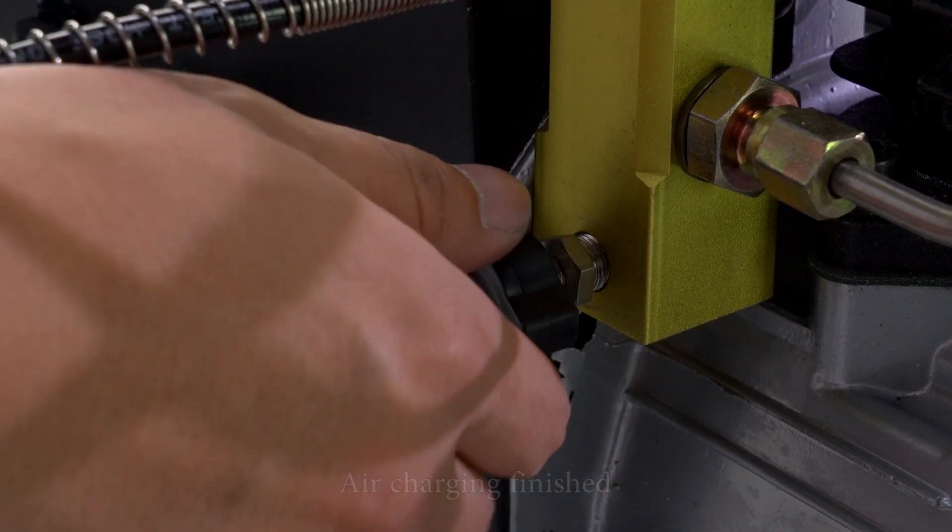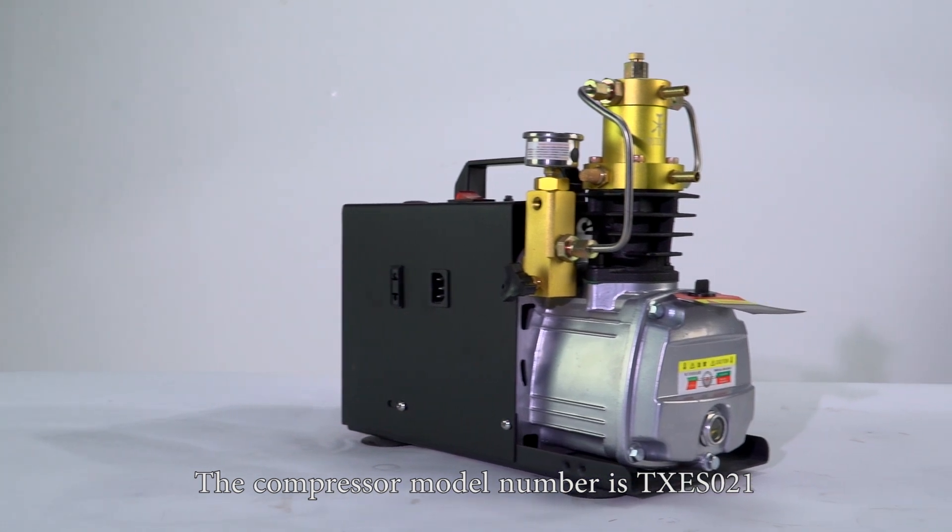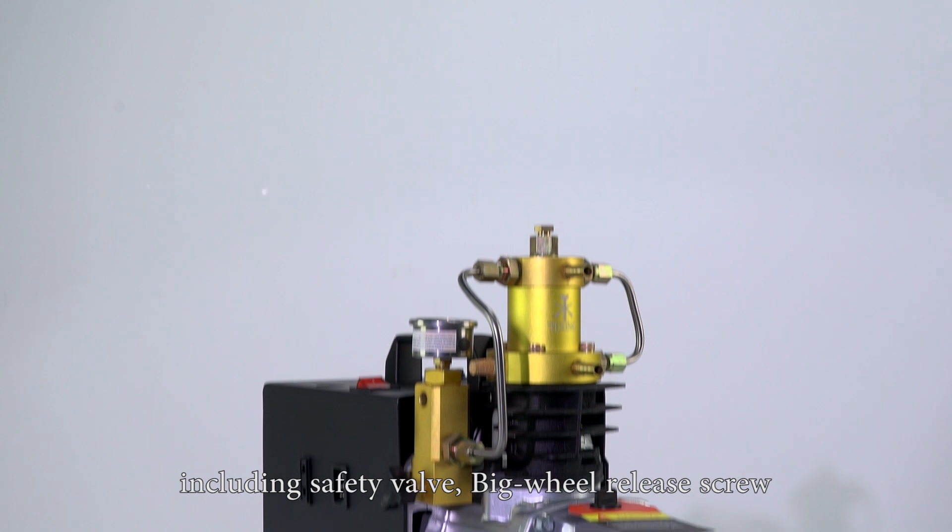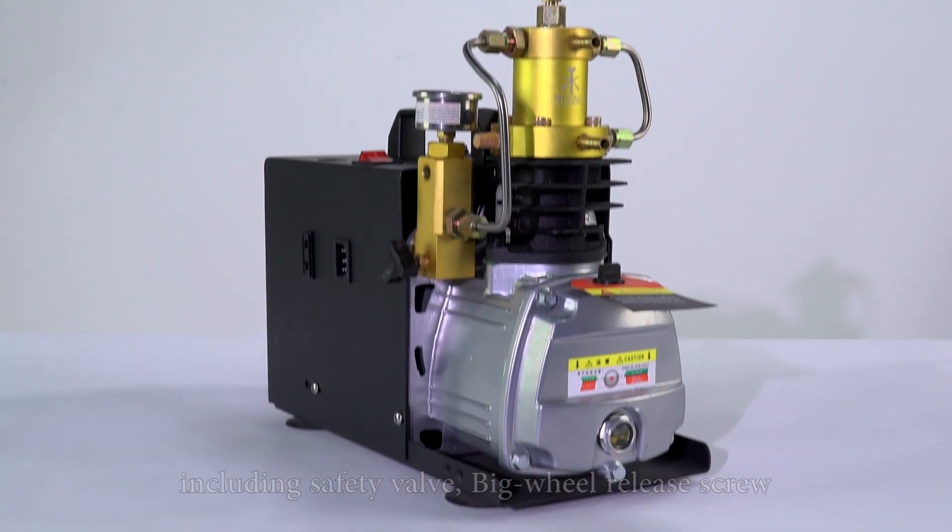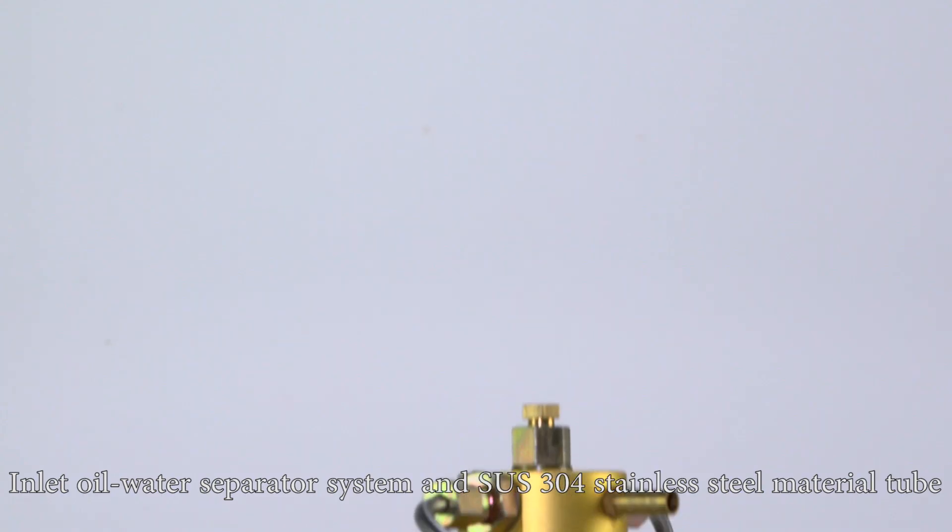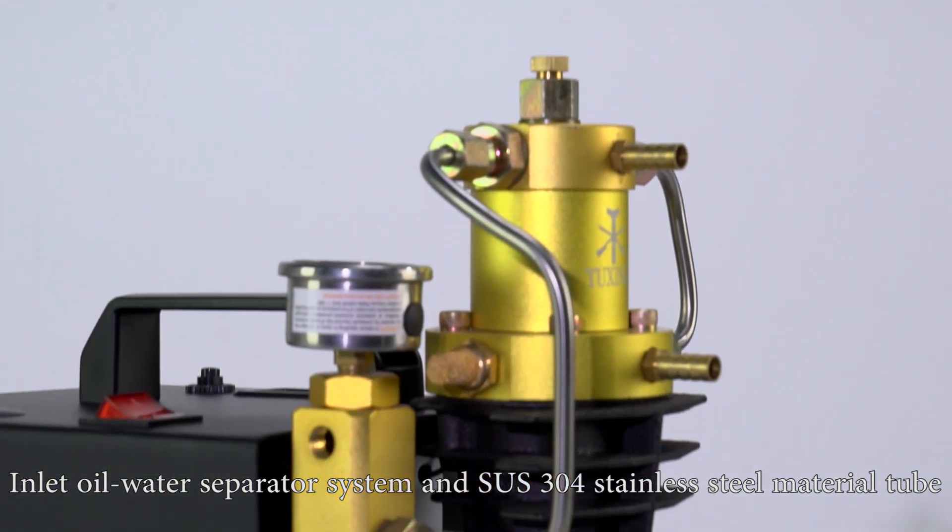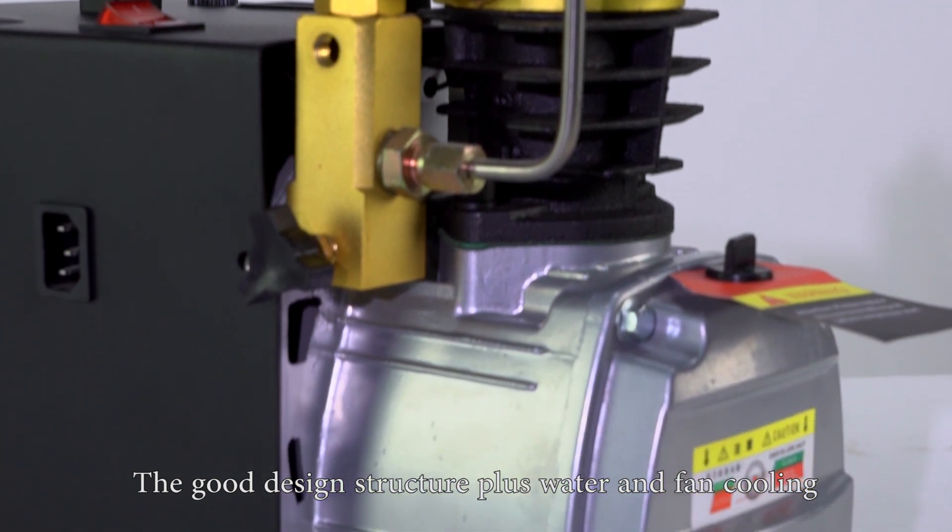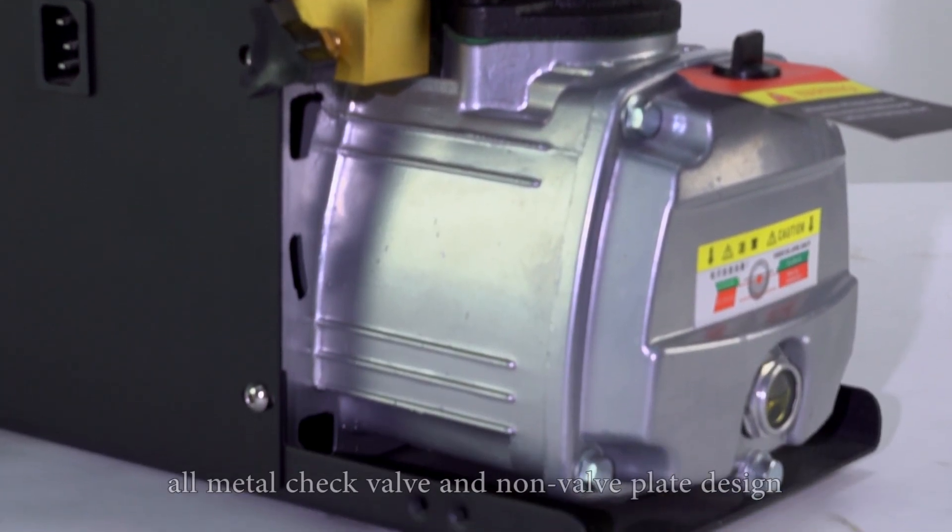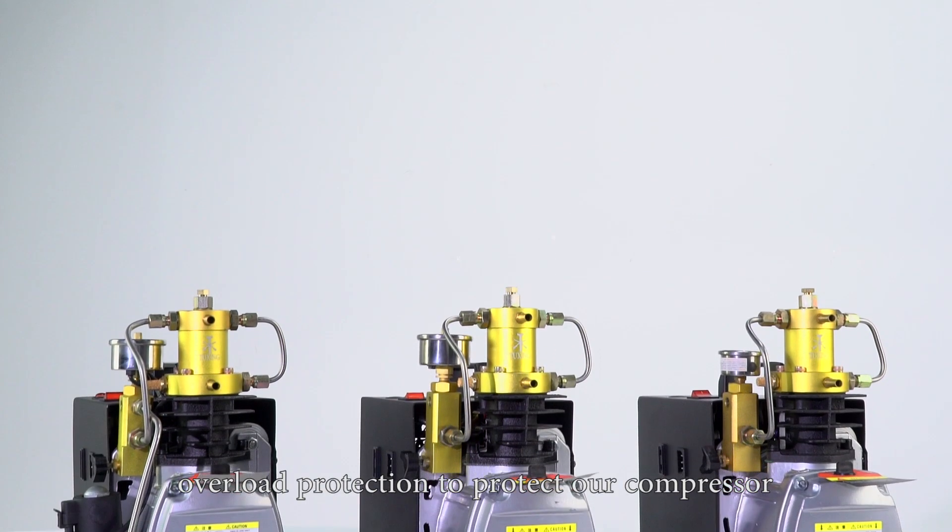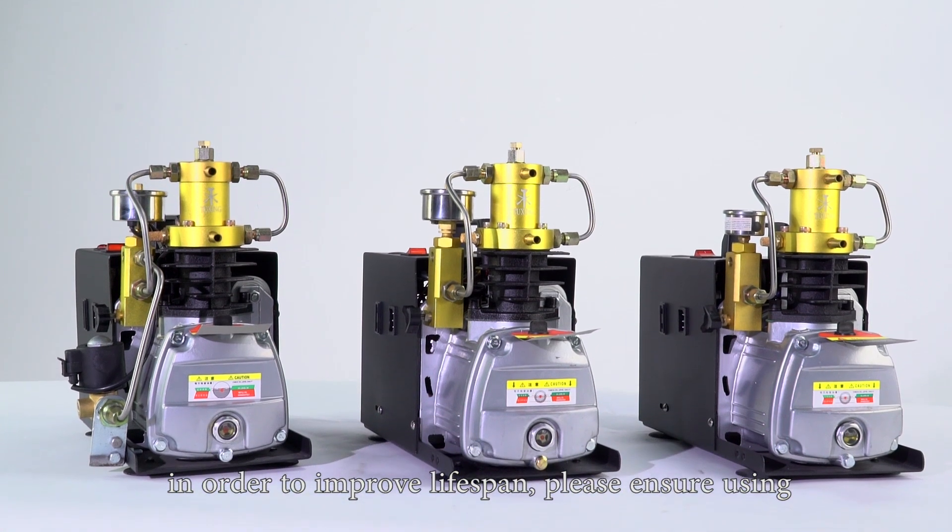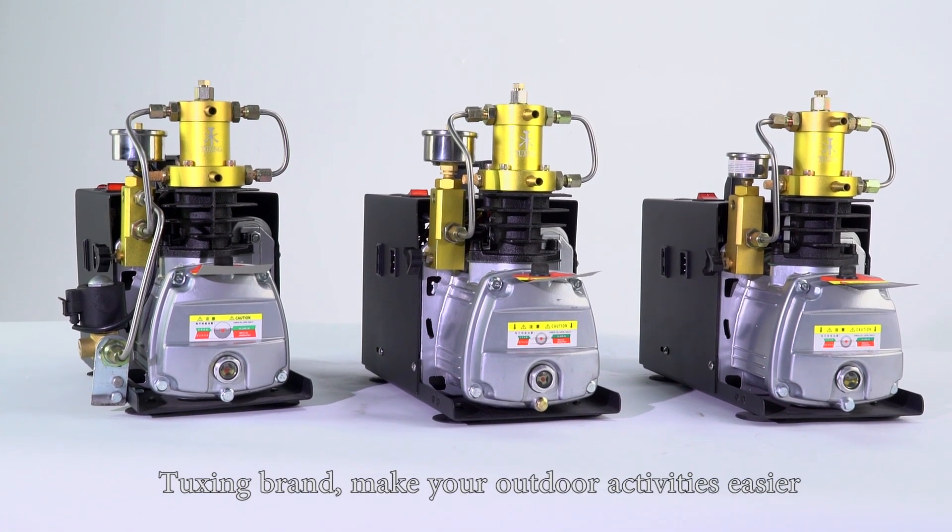Air charging finished. The compressor model number is TXES021, including safety valve, big wheel release screw, inlet oil water separator system, and SUS304 stainless steel material tube. The good design structure plus water and fan cooling. Our metal check valve and valve plate design. Overload protection to protect our compressor in order to improve lifespan. Please ensure using TXES021 brand. Make your outdoor activities easier.